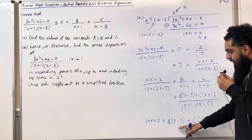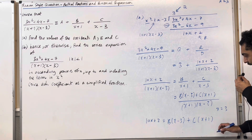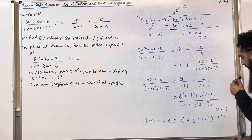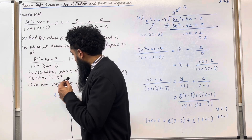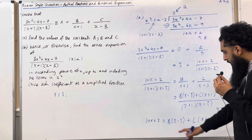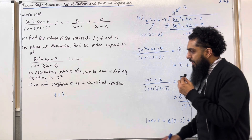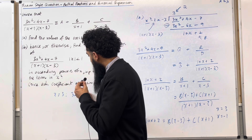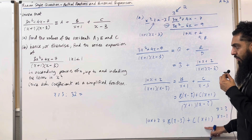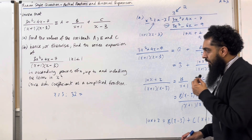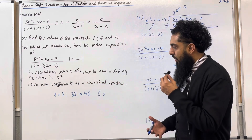If I set the bracket (x minus 3) equal to 0 and solve, I get x equals 3. If I set the bracket (x plus 1) equal to 0 and solve, I get x equals minus 1. Substituting x equals 3: 10 times 3 plus 2 is 32. The B term vanishes, and we get 32 equals 4C. Hence C equals 32 divided by 4, which is 8.